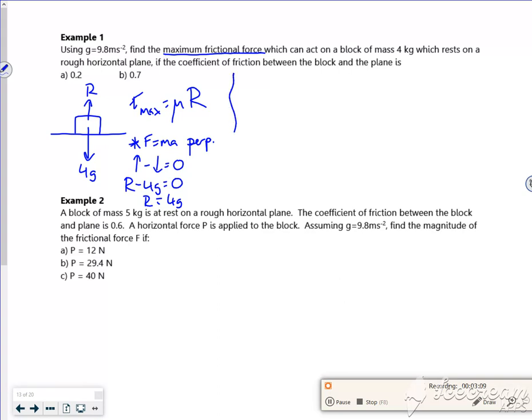So if I look at my mu value then, it's 0.2. F max, which was mu R. So F max is 0.2 times 4G.